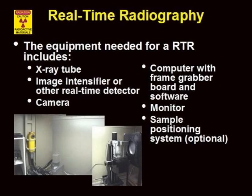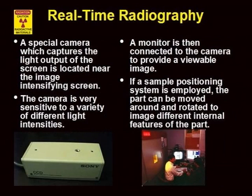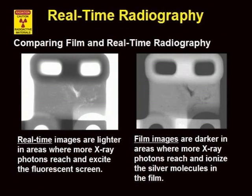The equipment needed to perform real-time radiography includes an x-ray tube, image intensifier, camera, computer with frame grabber hardware, and a monitor. Most real-time radiography systems also include a manipulator for sample positioning. Many real-time systems are enclosed in a shielded container rather than the large room typically used for film radiography. The x-rays stimulate light emission from phosphors on the large end of the photomultiplier tube. The intensifier amplifies the faint light from the phosphor screen, and the final image is detected by a video camera. A special camera sensitive to a large range of light intensities is connected to a high-resolution monitor. The operator can view the image on the monitor while simultaneously moving the test article for the best view. Real-time images are lighter than film images in areas where more x-rays pass through the part.